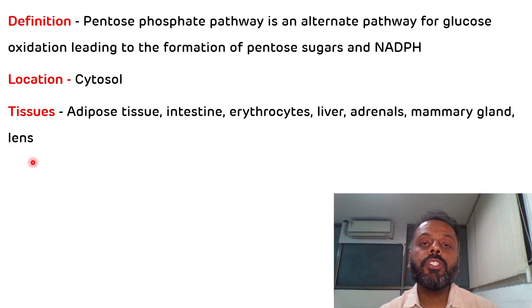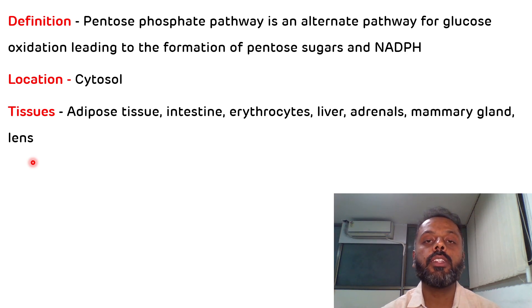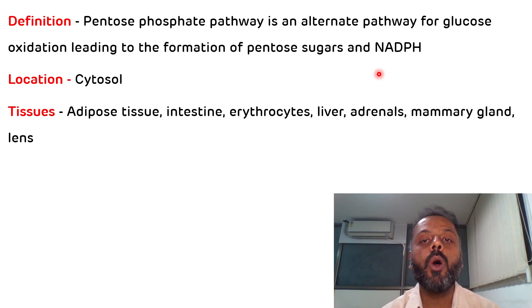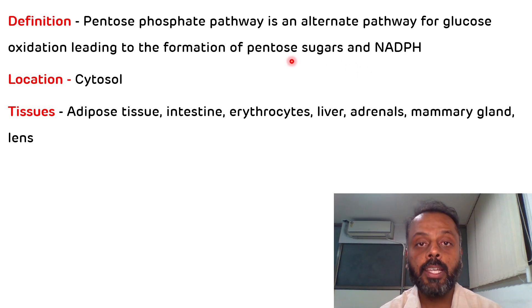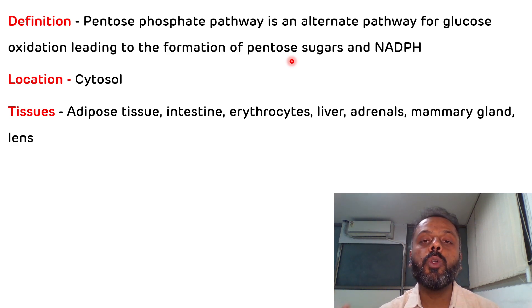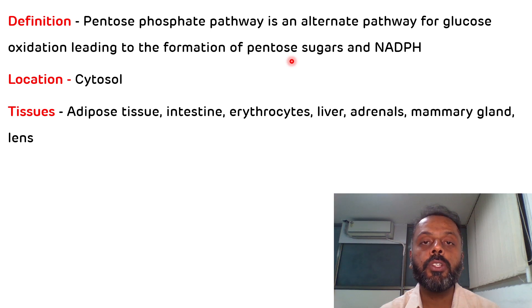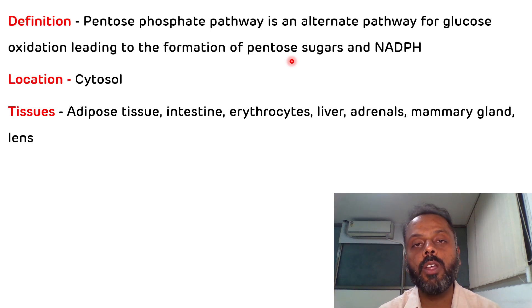The HMP shunt pathway is divided into two phases. The first phase is the oxidative phase, which is concerned with the synthesis of NADPH. The second phase is the non-oxidative phase, which is concerned with the synthesis of pentose sugars. Around 10% of glucose enters this pathway daily for complete oxidation. Importantly, in the HMP shunt pathway there is neither utilization nor synthesis of ATP.